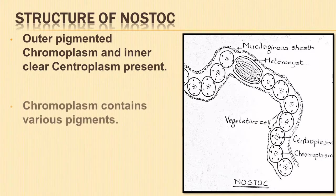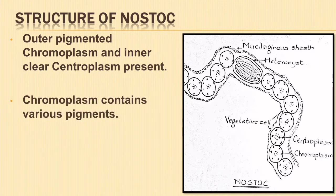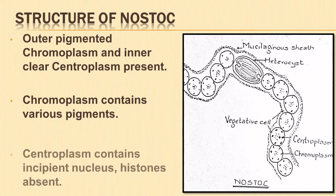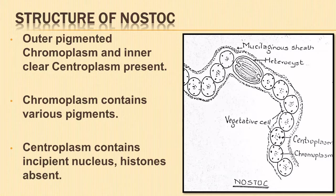In the chromoplasm are present various pigments like chlorophyll, phycocyanin, and phycoerythrin, and also proteinaceous cyanophycine granules and cyanophycin starch granules. The centroplasm contains an incipient nucleus and DNA which is devoid of histones.